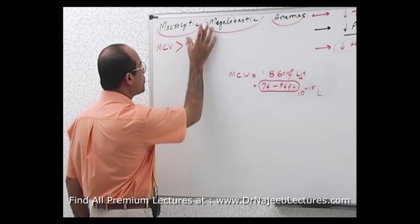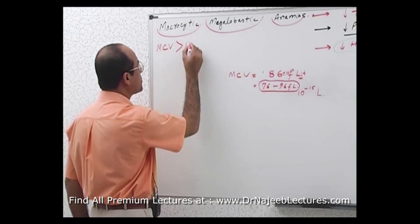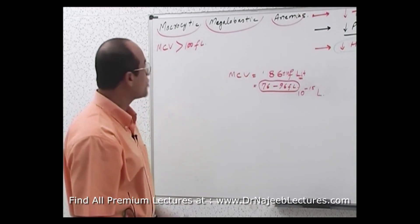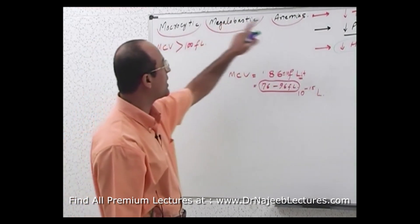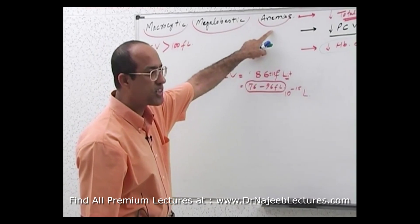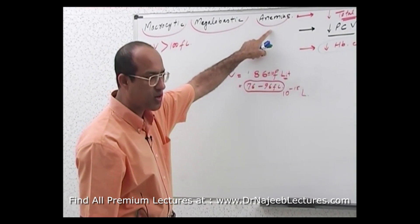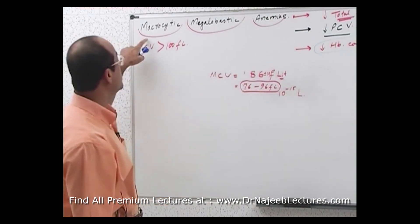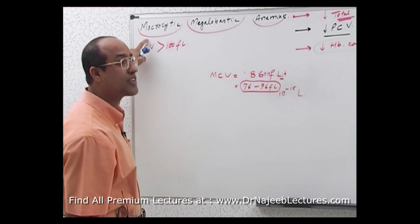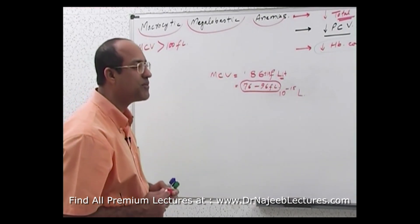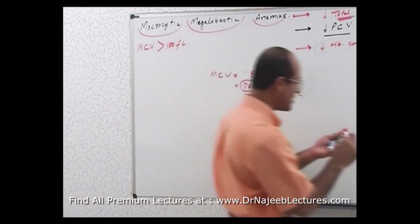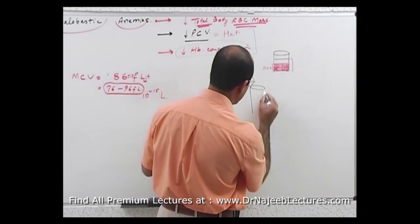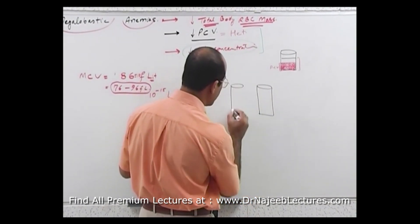In our patient, when I say there is a macrocytic problem, it means mean corpuscular volume is more than 96 femtoliters, or rounding up, more than 100 femtoliters. So in macrocytic megaloblastic anemia, the patient has packed cell volume less than normal, hemoglobin concentration less than normal, and individual RBCs larger than normal — meaning the RBC count will be very, very low.